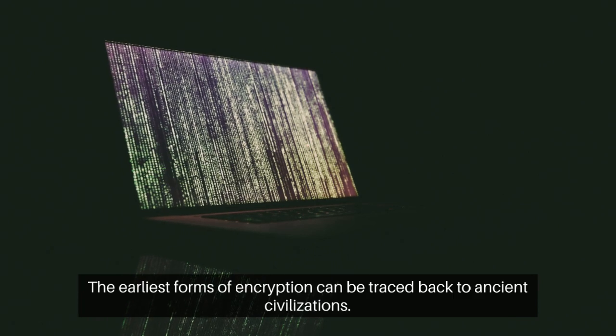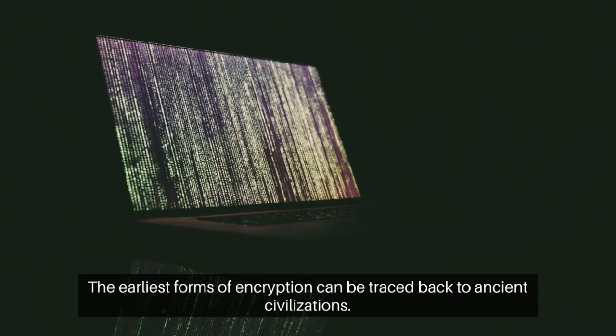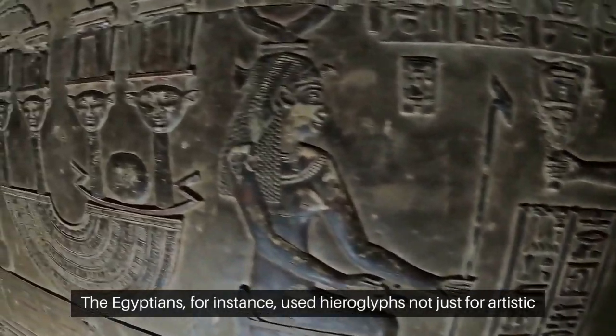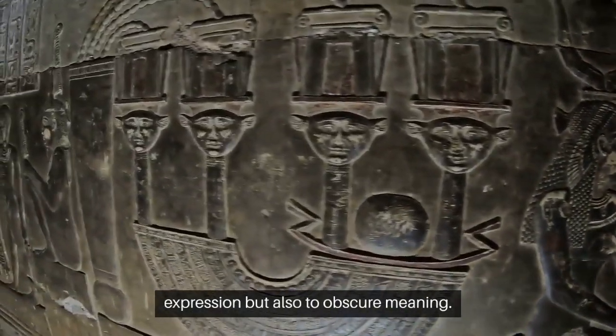The earliest forms of encryption can be traced back to ancient civilizations. The Egyptians, for instance, used hieroglyphs not just for artistic expression, but also to obscure meaning.